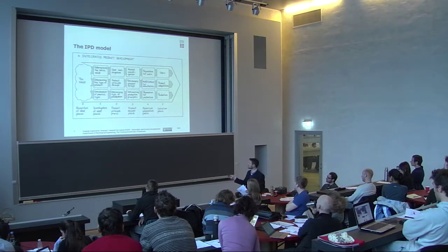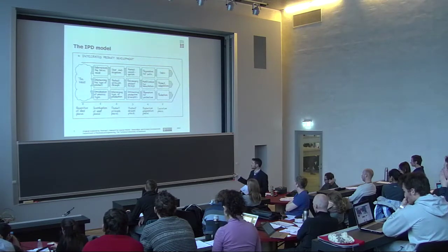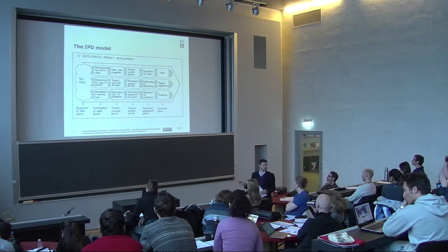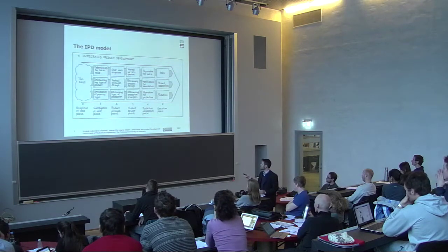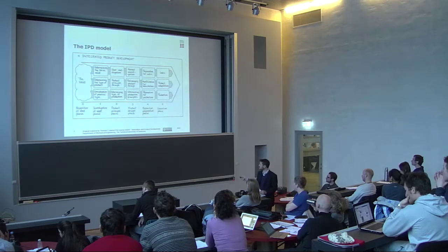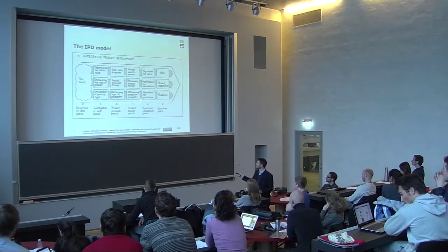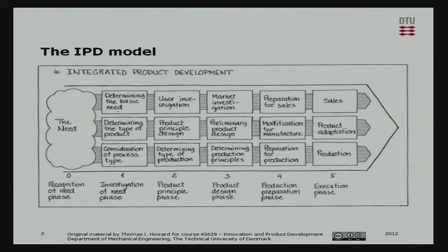Then you move on to the product principle phase, where you do a user investigation, design the product principle, and design the type of production system you're going to use. Then you do a market investigation, primarily product design, and determine the product principles in the product design phase. I think this is the type of phase you'll end your project at — here, with a plan to move in this direction. Then you go on to the production preparation phase and the execution phase.